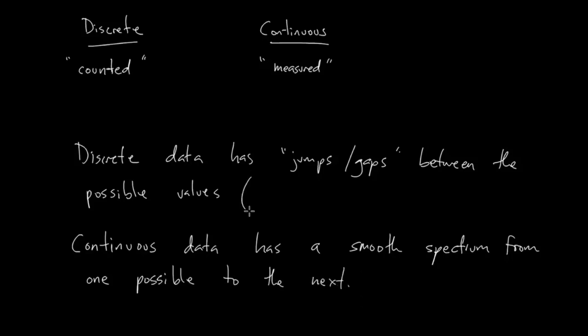But by comparison, continuous data has a smooth transition, or a smooth, I'll call it a smooth spectrum, from one possible value to the next. One of the ways that they'll describe this in your textbook is to say that discrete data, you have a finite or a limited number of values, whereas continuous data has an infinite number of values.